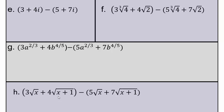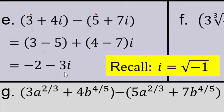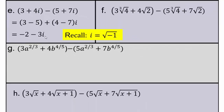Now let's discuss the complex number subtraction. Recall that i is √(−1). For (3 + 4i) minus (5 + 7i), we subtract like units: 3 minus 5 for the real parts, and 4 minus 7 for the imaginary parts. That gives negative 2 for the real part and negative 3i for the imaginary part. So the answer is −2 − 3i. Real parts subtract with real parts, imaginary parts subtract with imaginary parts — subtraction of like units.